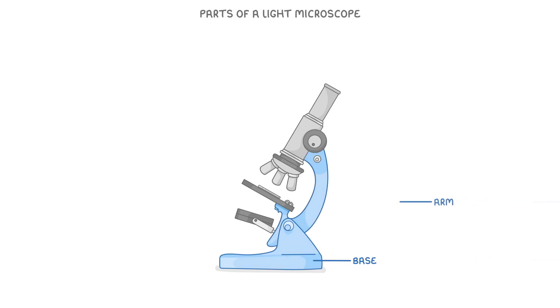Next, let's move on to look at the different parts of a light microscope. Supporting the whole thing is the base at the bottom, and then the arm that connects the bottom to the top.